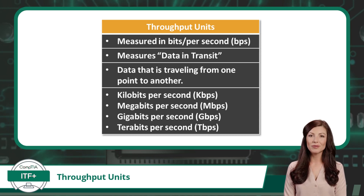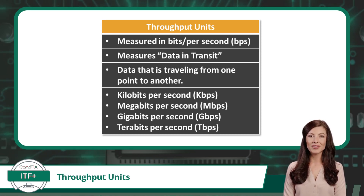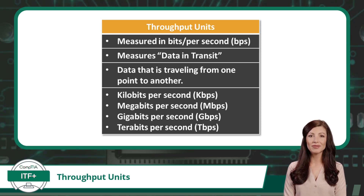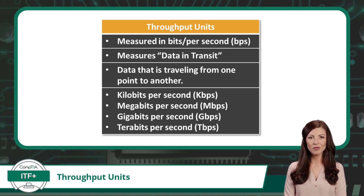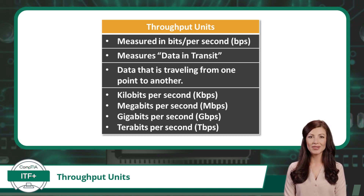Then there are gigabits per second, which are quantities measured in billions of bits per second. This is a common throughput rate for modern internet connections in urban areas, and gigabit connections are more than sufficient for most residential demands and many corporate environments.